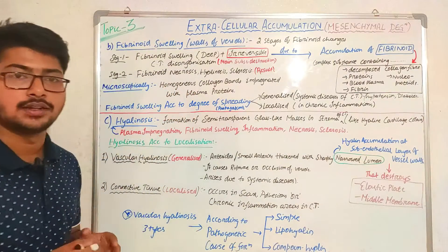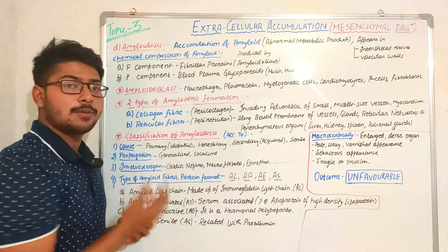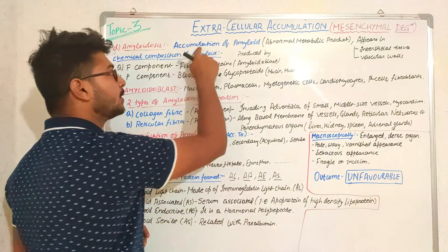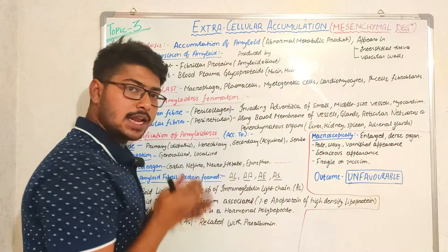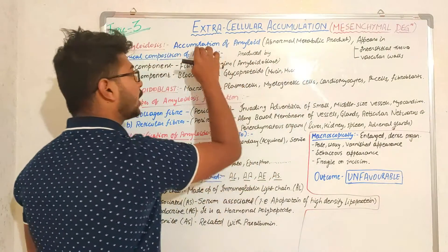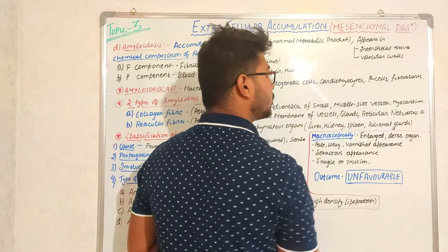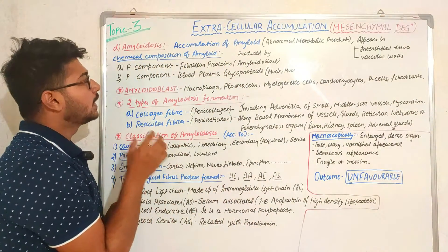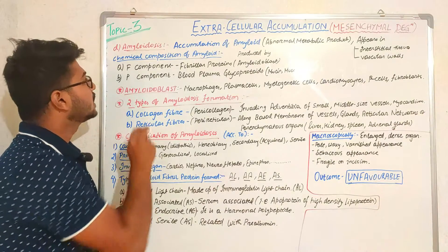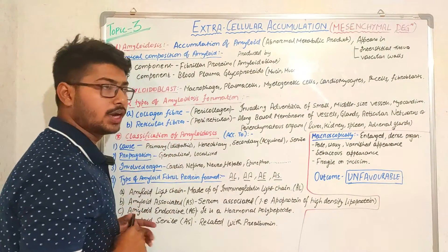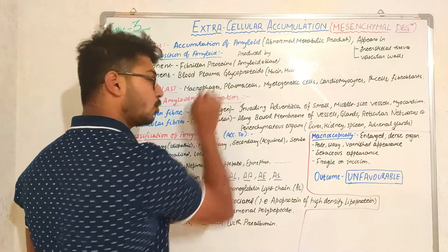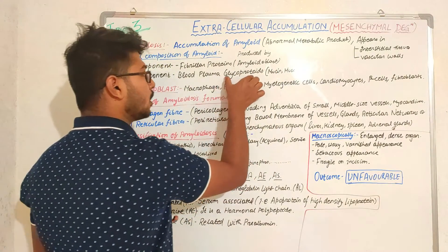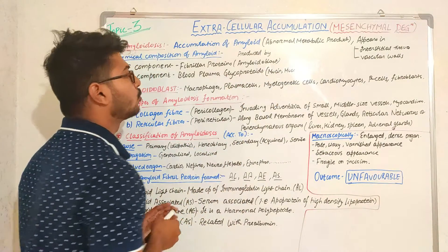The next type of protein accumulation is amyloidosis. In amyloidosis there is accumulation of amyloid — an abnormal metabolic product — mostly in the interstitial tissues and vascular walls like arteries and veins. Amyloid has two components: the F component, consisting of fibrillar proteins produced by amyloidoplasts, and the P component, consisting of blood plasma glycoproteins such as mucin and mucoid.